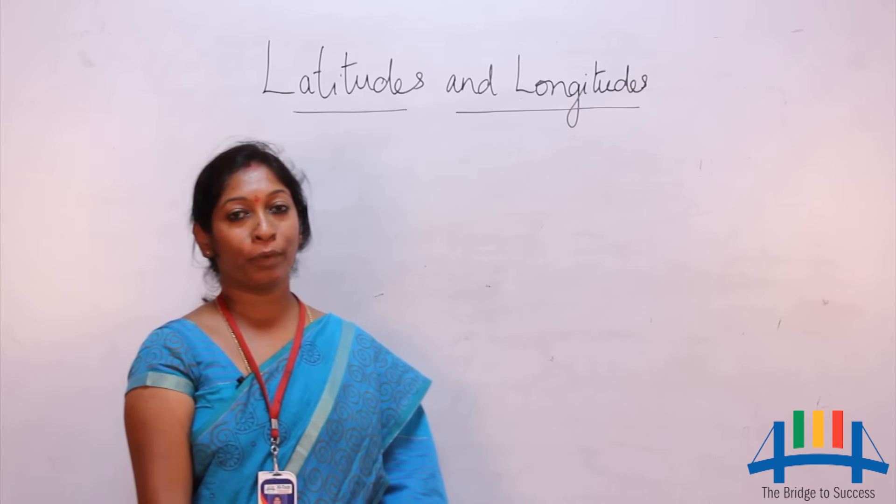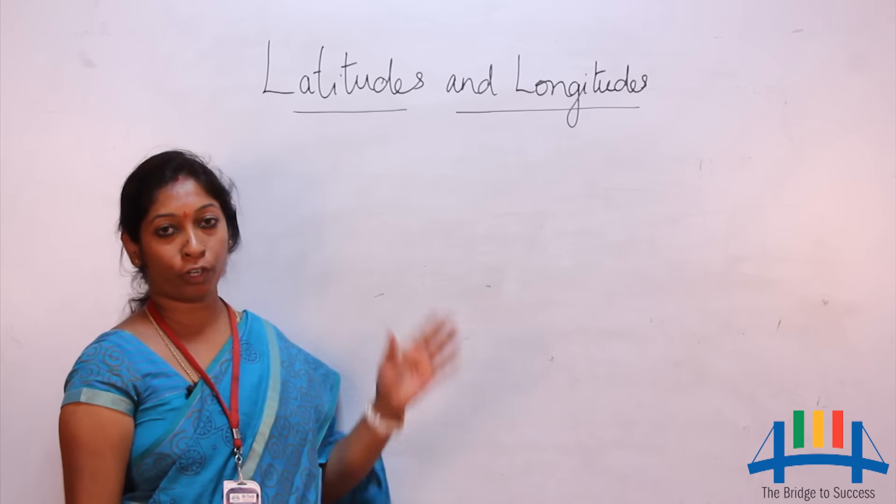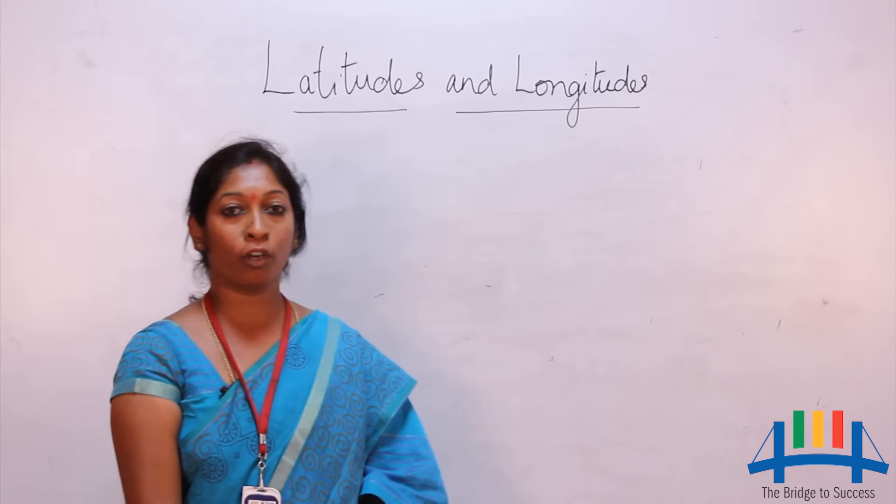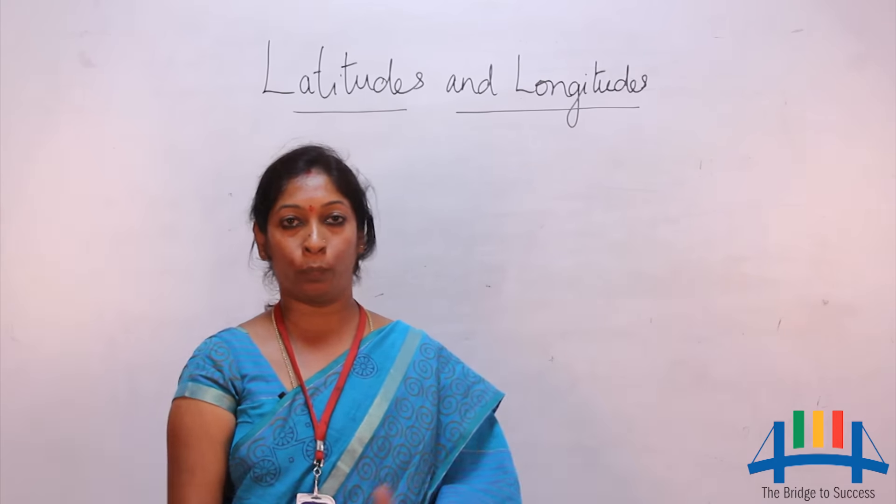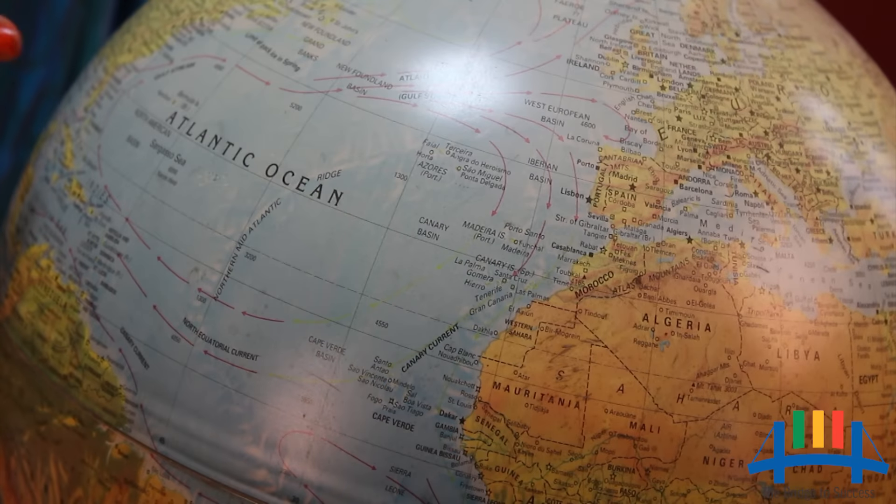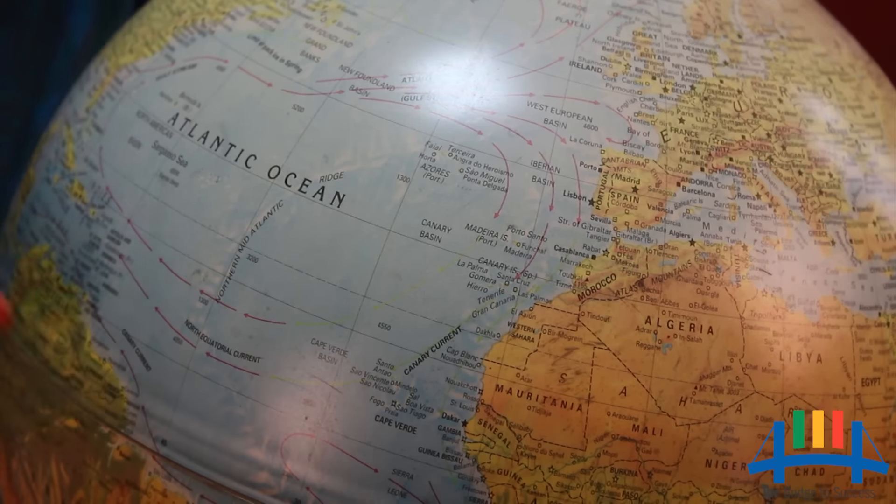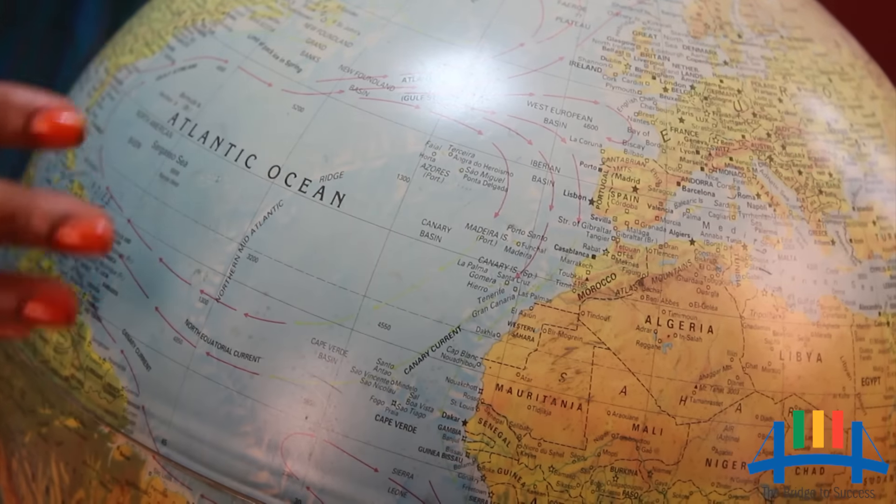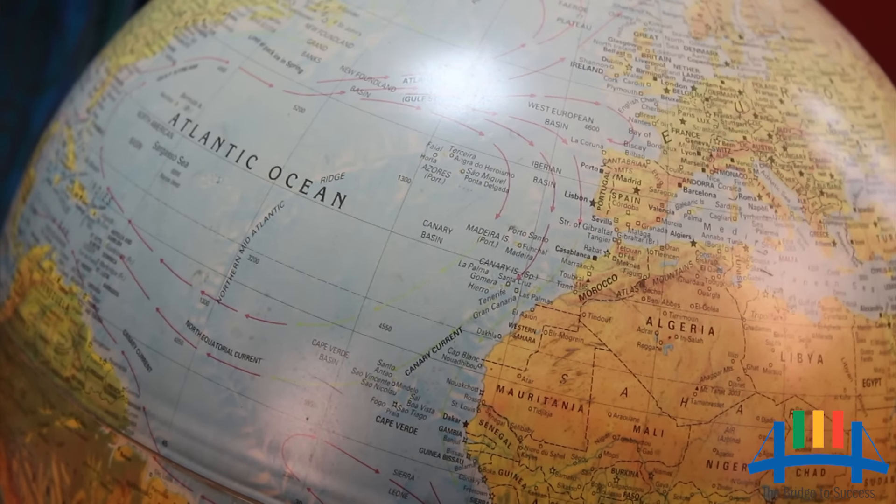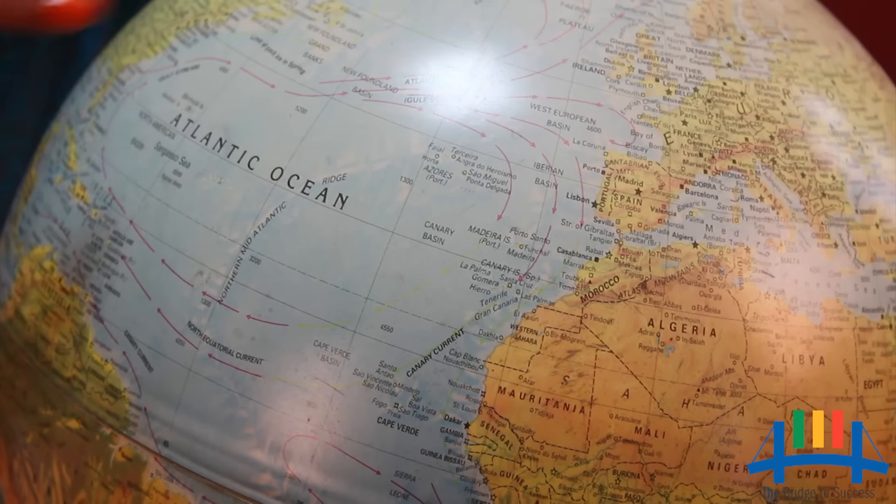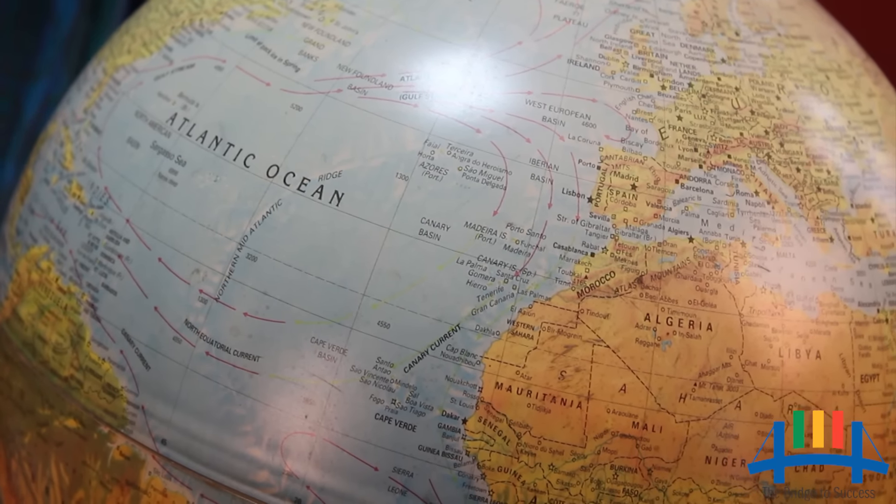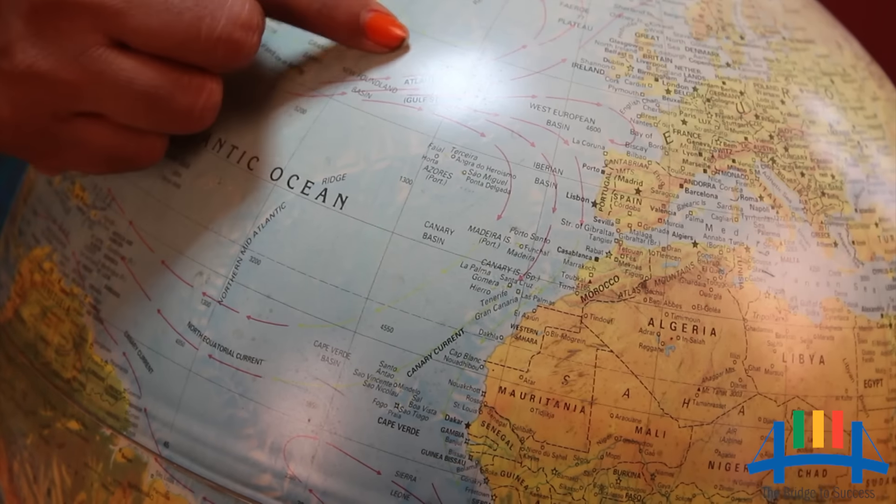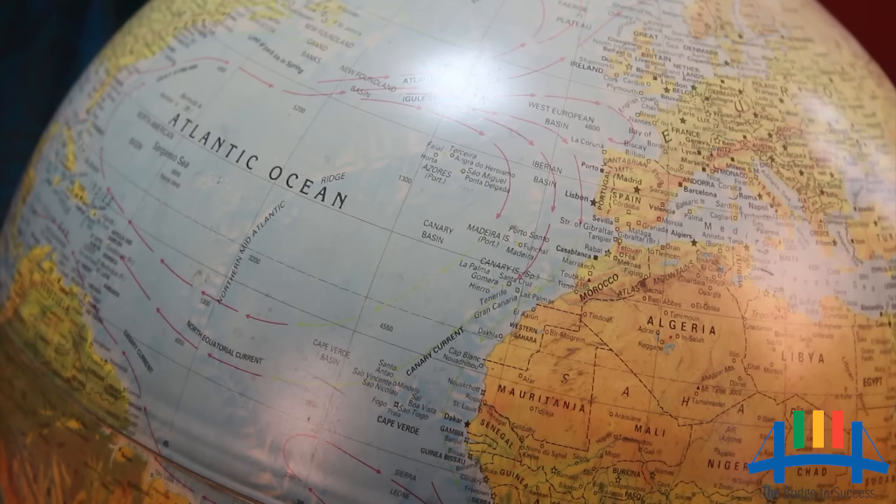Hello friends, my topic today is latitudes and longitudes. To learn more, let us have a closer look at the globe. When we look at a map or globe, we notice the earth is covered by many vertical and horizontal lines. These are imaginary lines. The imaginary lines running horizontally from east to west are known as parallels of latitude, and the imaginary lines running from north to south are called meridians of longitude.